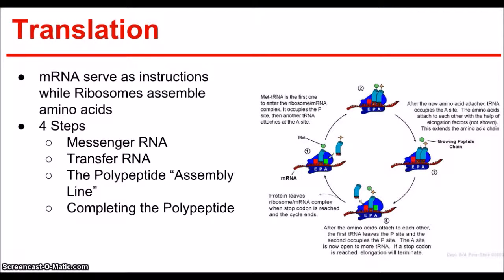Translation: mRNA serves as instructions. However, they need ribosomes to assemble the amino acids. Translation is the decoding of an mRNA message into a polypeptide chain or a protein. During translation, the cell uses information from messenger RNA to produce these proteins. And there are four steps.